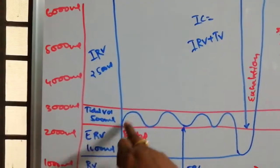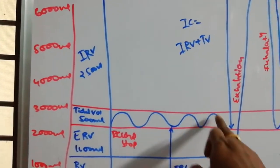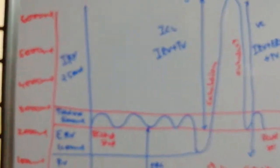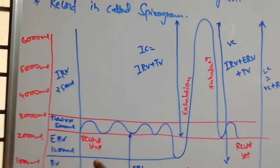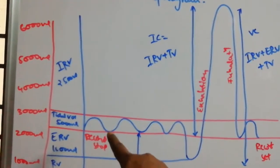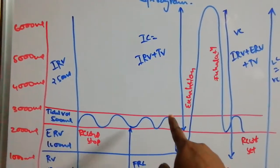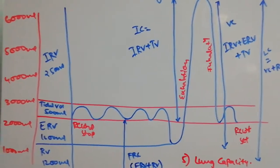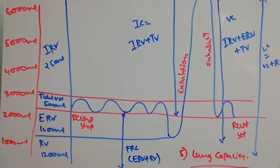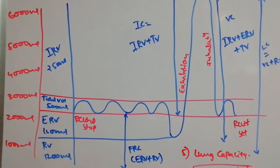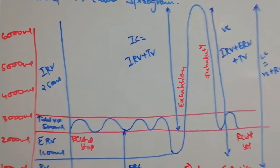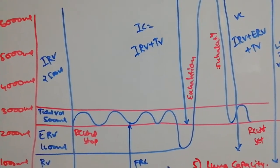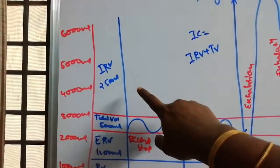To recap: tidal volume is the normal breath — inhalation and exhalation — at 500 ml. We inhale 500 ml and exhale 500 ml during normal, calm breathing. Beyond this, we can forcefully exhale or forcefully inhale.